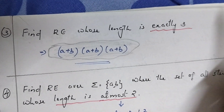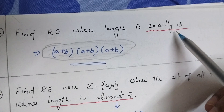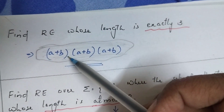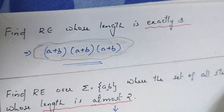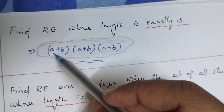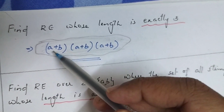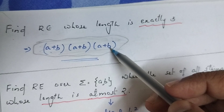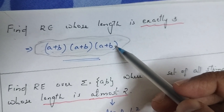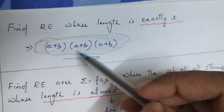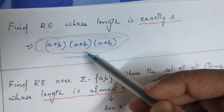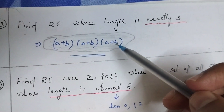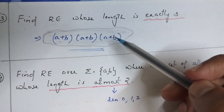Then, the regular expression for exactly length 3: length 2 is (a+b)(a+b), so length 3 is (a+b)(a+b)(a+b). That gives us aaa, aab, aba, abb, baa, bab, bba, bbb — multiplying each combination with one more (a+b) gives all strings of length 3.